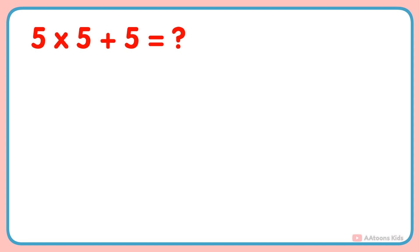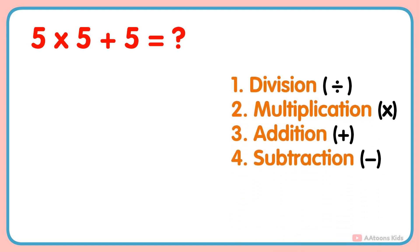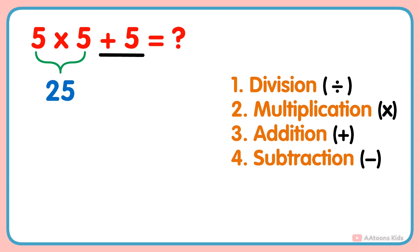What is 5 multiplied by 5 plus 5? In this problem, two operations — multiplication and addition — are given. So according to the order, we would first perform the multiplication: 5 multiplied by 5 gets 25. And next, add 5 to the result, and you will get your answer: 25 plus 5 is 30.